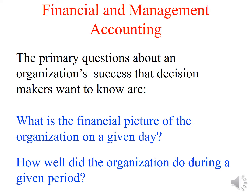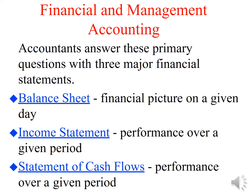The primary questions for decision makers are: first, what is the financial picture — the health — of the organization? Is it healthy or not? Second, how well did the organization do in a given period? You can look at a previous quarter or previous year's same quarter to understand whether the business is cyclical, then predict for the next quarter. You can arrange finances, plan for manpower, and plan for capital expenditure accordingly.